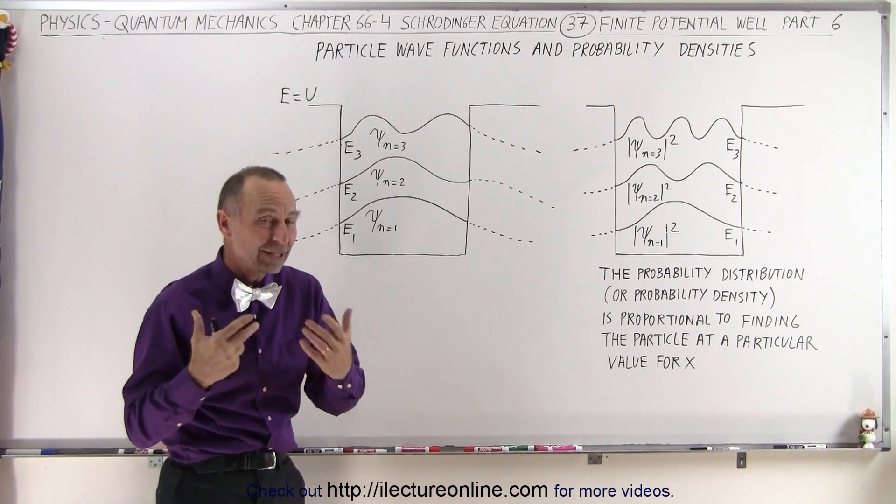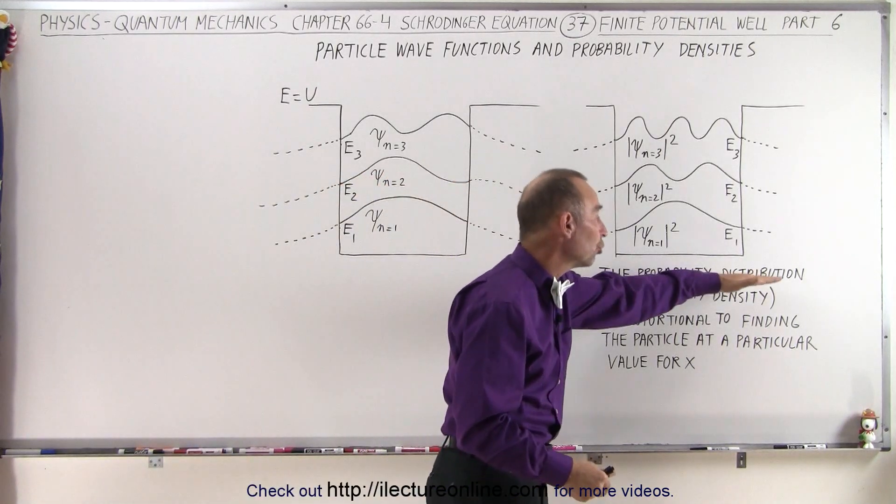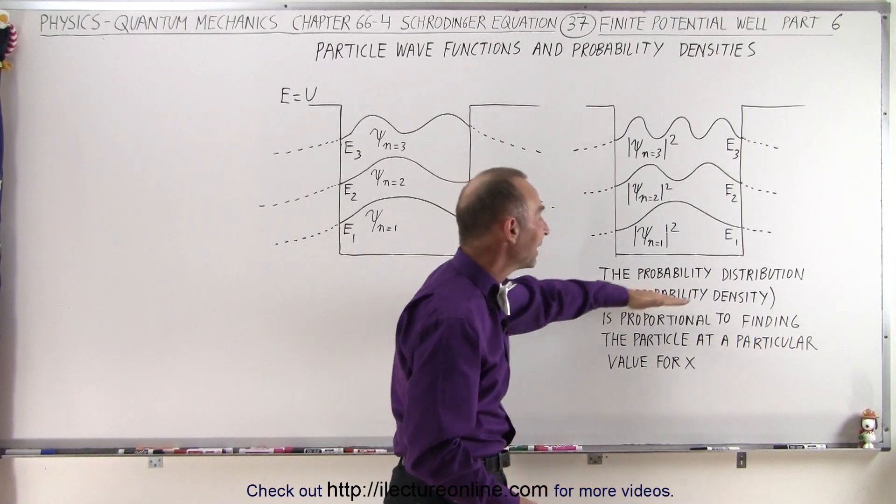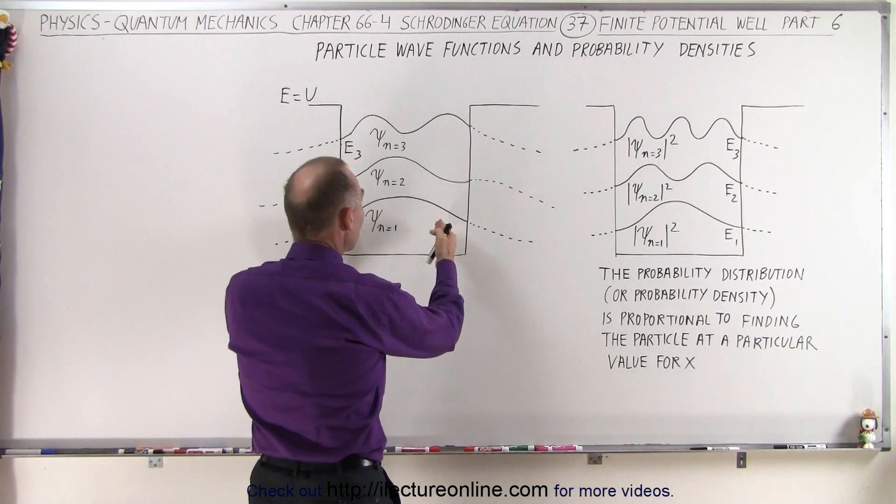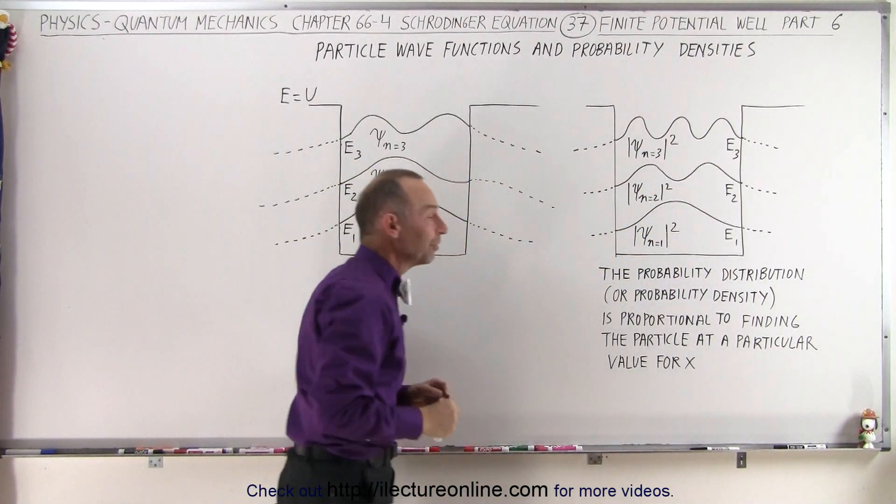We have a different name for them as well. We can call them the probability distribution functions or the probability density functions. All they are is simply the wave functions squared for each of the energy levels.